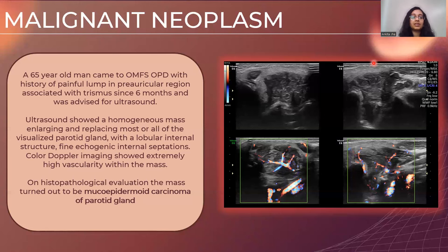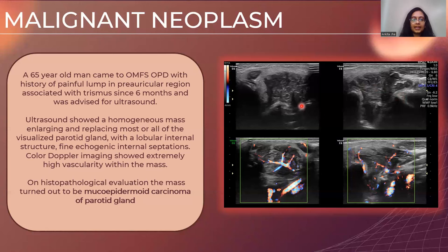We have a 65-year-old male patient who came to the OMFS OPD with a history of painful lump in the pre-auricular region associated with trismus since six months and was advised for ultrasound. On ultrasound, a homogeneous mass was seen enlarging, replacing most of the parenchyma, showing internal septations, lobulations, and hypervascularity on color Doppler studies. The patient underwent parotidectomy and on histopathology it was confirmed to be a mucoepidermal carcinoma.